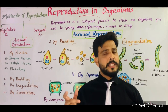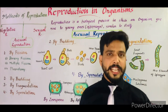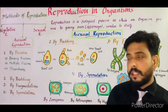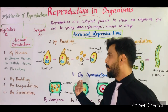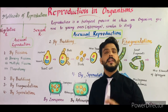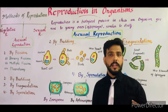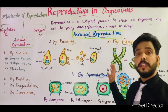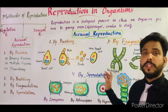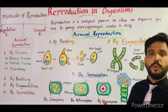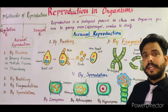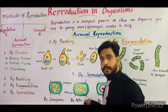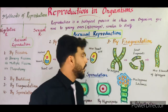Now the last method is sporulation. Sporulation means when asexual reproduction takes place with the help of spores, this type of reproduction is known as sporulation. Here I have taken the example of Ulothrix, which is also a freshwater filamentous alga found at the bottom of the pond.